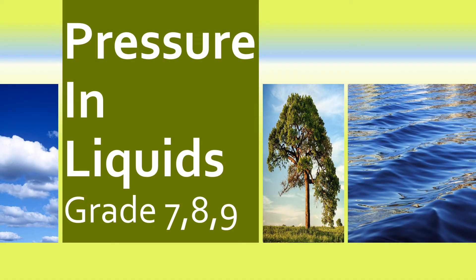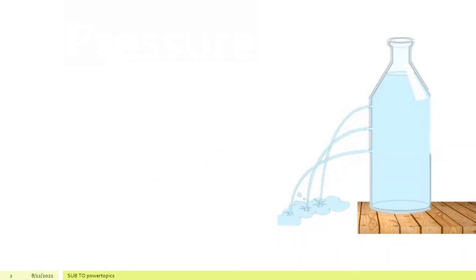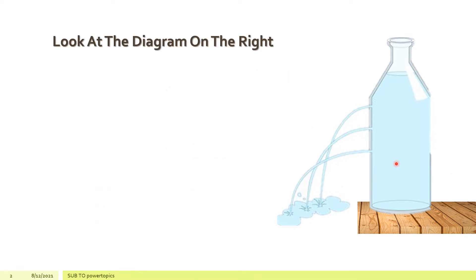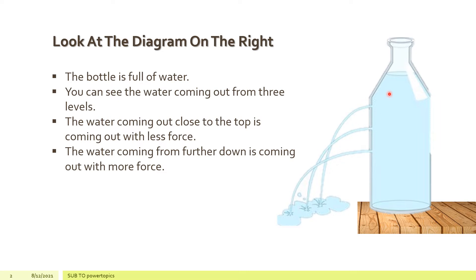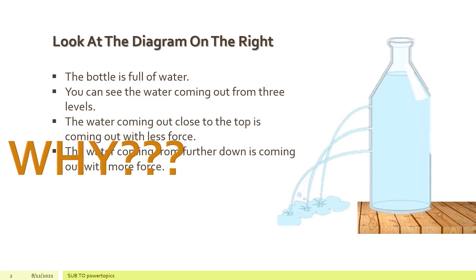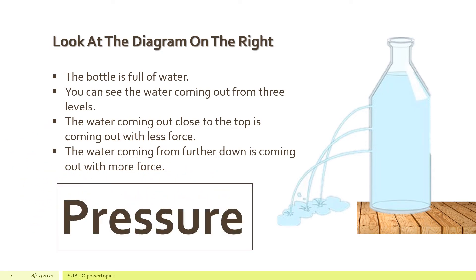Hello, Power Fam! Today's power topic is pressure in liquids for grades 7, 8, and 9 — in short, for lower secondary. Look at the diagram on the right. The bottle is full of water. You can see the water coming out from three levels. The water coming out close to the top is coming out with less force, but the water coming out from further down is coming out with more force. Why? Because of pressure.